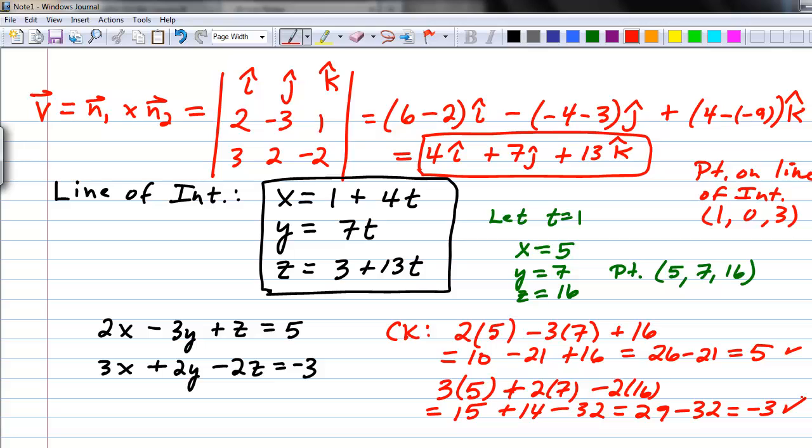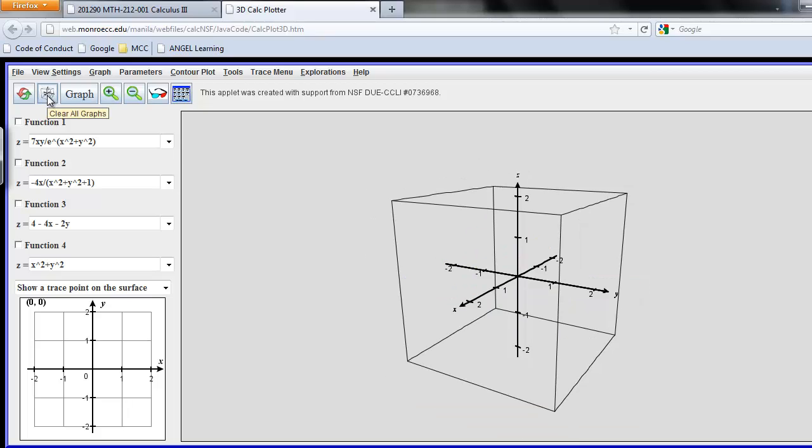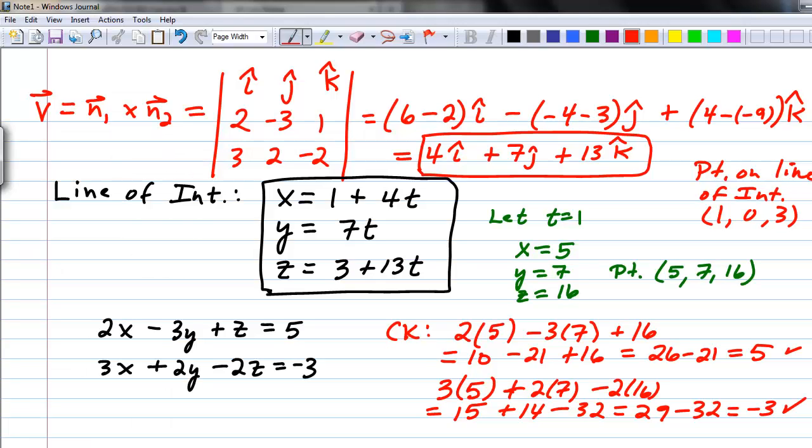So algebraically, we know that this line of intersection that we have here indeed works and satisfies the two plane equations. What I'd like to do next is show you how to verify that this line of intersection works visually using the CalcPlot 3D applet. We can find the CalcPlot 3D applet on the web. You can search for CalcPlot 3D and I'm sure you'll be able to find it on Google, or you can go to my main web page.